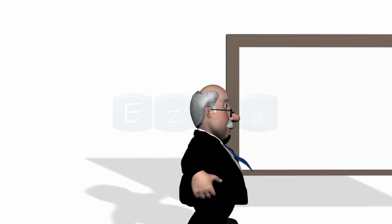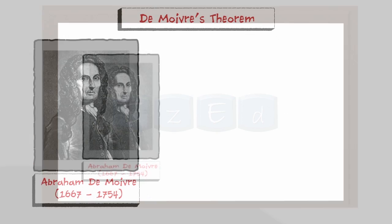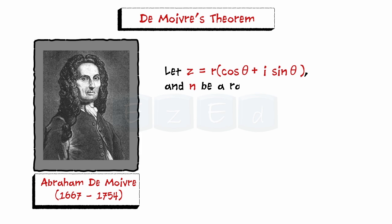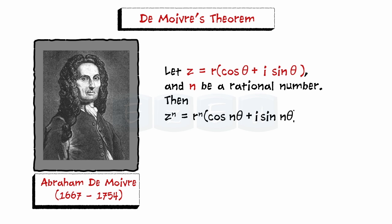Instead, we can take help from Mr. Abraham De Moivre, who stated De Moivre's theorem as follows. Let z equal to r times cosine theta plus i sine theta, and n be a rational number. Then z to the power n equals r to the power n times cosine n theta plus i sine n theta. This says to raise a complex number to a power, raise the modulus to that power and multiply the argument by that power.